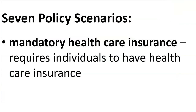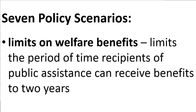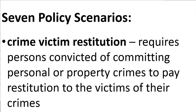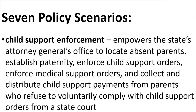The seven policy scenarios are as follows. One: Mandatory health care insurance — requires individuals to have health care insurance. Two: Limits on welfare benefits — limits the period of time recipients of public assistance can receive benefits to two years. Three: Crime victim restitution — requires persons convicted of committing personal or property crimes to pay restitution to the victims of their crimes. Four: Child support enforcement — empowers the state attorney general's office to locate absent parents, establish paternity, enforce child support orders, enforce medical support orders, and collect and distribute child support payments from parents who refuse to voluntarily comply with child support orders from a state court.